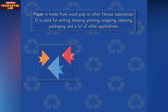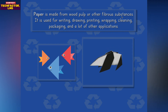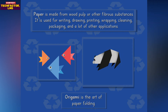Paper is made from wood pulp or other fibrous substances. It is used for writing, painting, drawing, printing, wrapping, cleaning, packaging, and many other applications. Origami is the art of paper folding.